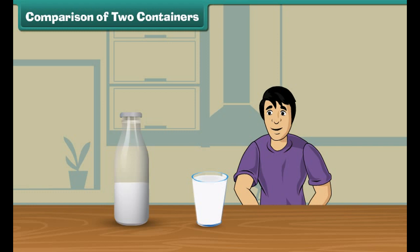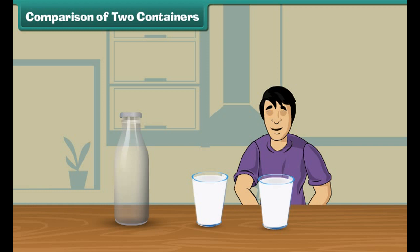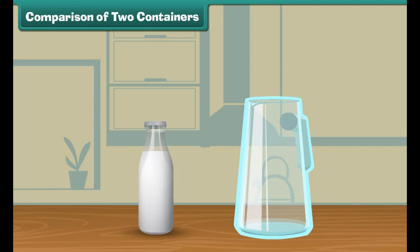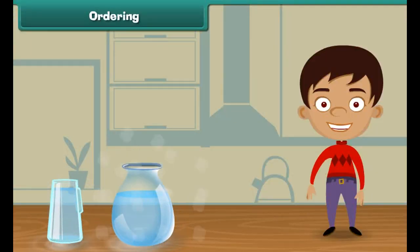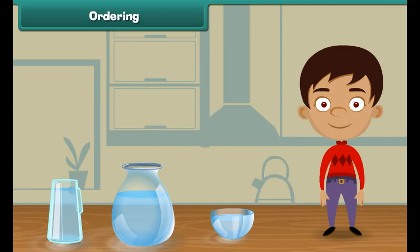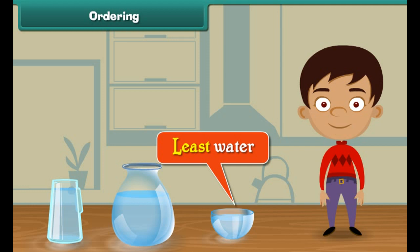Now it is time to check what you have learnt. Click on the container which holds more water. Sam brought a bottle of milk. Can he empty this bottle in a glass? He fills the glass with the milk from the bottle. Look, milk is still there in the bottle. He then takes another glass and pours the remaining milk in it. The bottle is empty now.